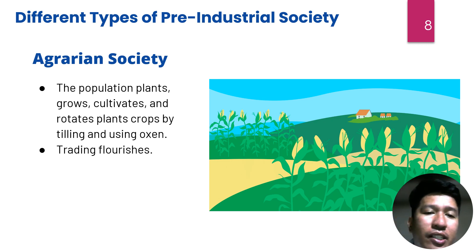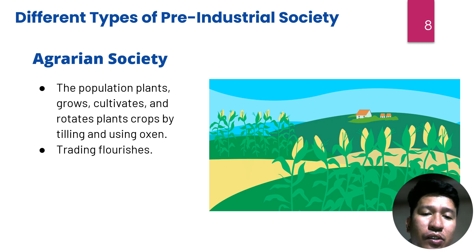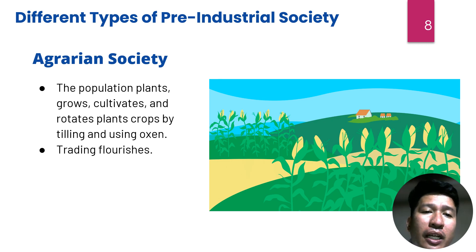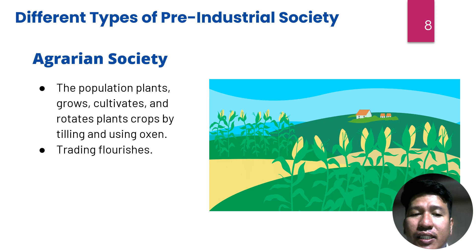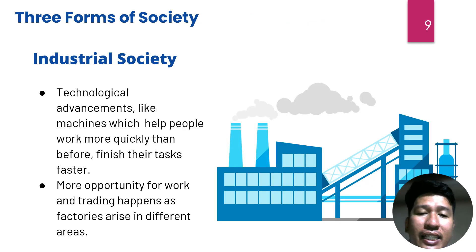The third type is agrarian society. The population plants, grows, cultivates, and rotates crops by tilling the land. You may be more familiar with this type because our country still has many characteristics of an agricultural society. What are these characteristics of being an agricultural society?